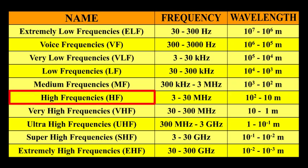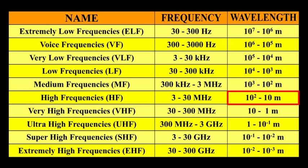High frequencies, i.e. HF, the frequency will be 3 to 30 MHz. The wavelength will be 10 raised to 2 to 10 meters.